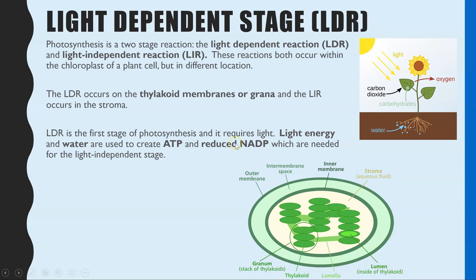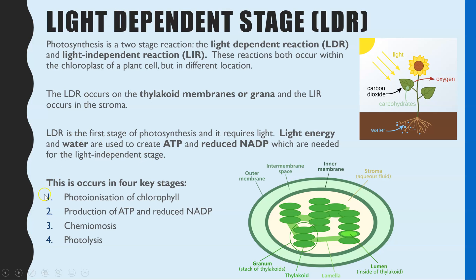As the name suggests, the light dependent stage requires light. That light provides energy needed to split water, and also drives other processes to create ATP and reduced NADP — both of which are needed in the light independent stage. The light dependent reactions are split into four key reactions: photo ionization of chlorophyll, photolysis of water, ATP production, and chemiosmosis.